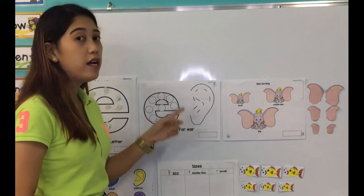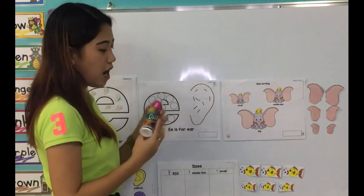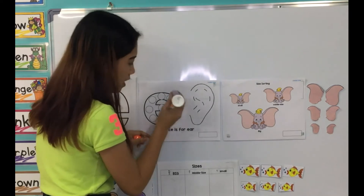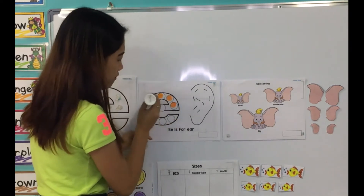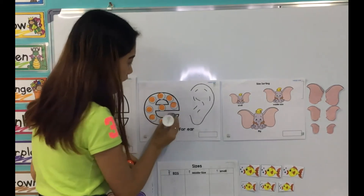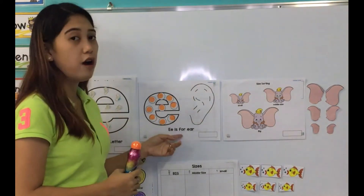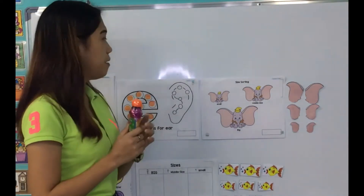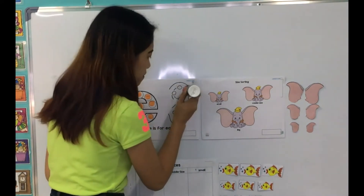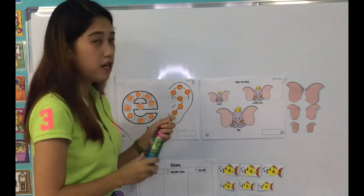E is for ear. How about we dub using our color orange dubber? How about we count 1, 2, 3, 4, 5, 6, 7, 8, 9. There are 9 on the letter E. E is for ear. And how about we dub also our ear? Let's dub. Dub, dub, dub. We dub all the ears.